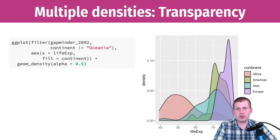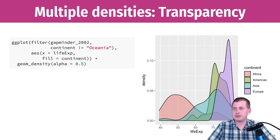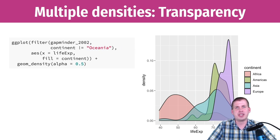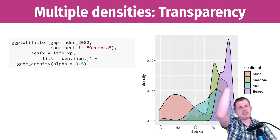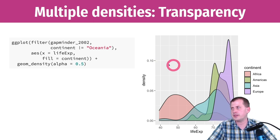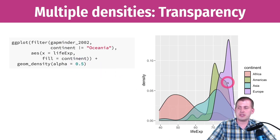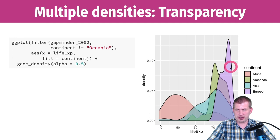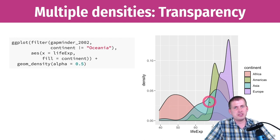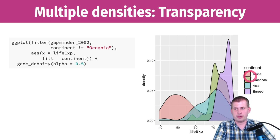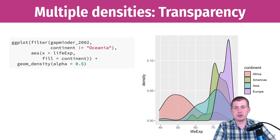You can also show multiple density plots instead of multiple histograms. For this example, Oceania was removed because it only has two observations — not enough data for the calculus to work properly. By setting the fill to be semi-transparent, you can see different distributions of life expectancy overlaid for each continent: Africa is down here, Europe is up here, and others are in between. This can get really busy with more than about four groups.